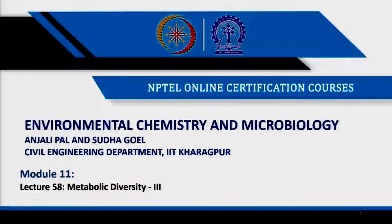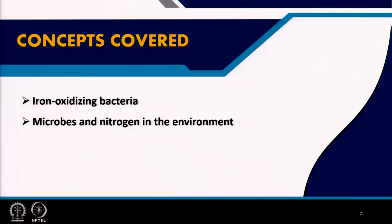Welcome everyone. This is the third and final part of this module — lecture 58 of module 11. In this last lecture of module 11, we are going to take a look at two other groups of bacteria: the first is iron oxidizing bacteria, and the second is the group of bacteria involved in the nitrogen cycle.